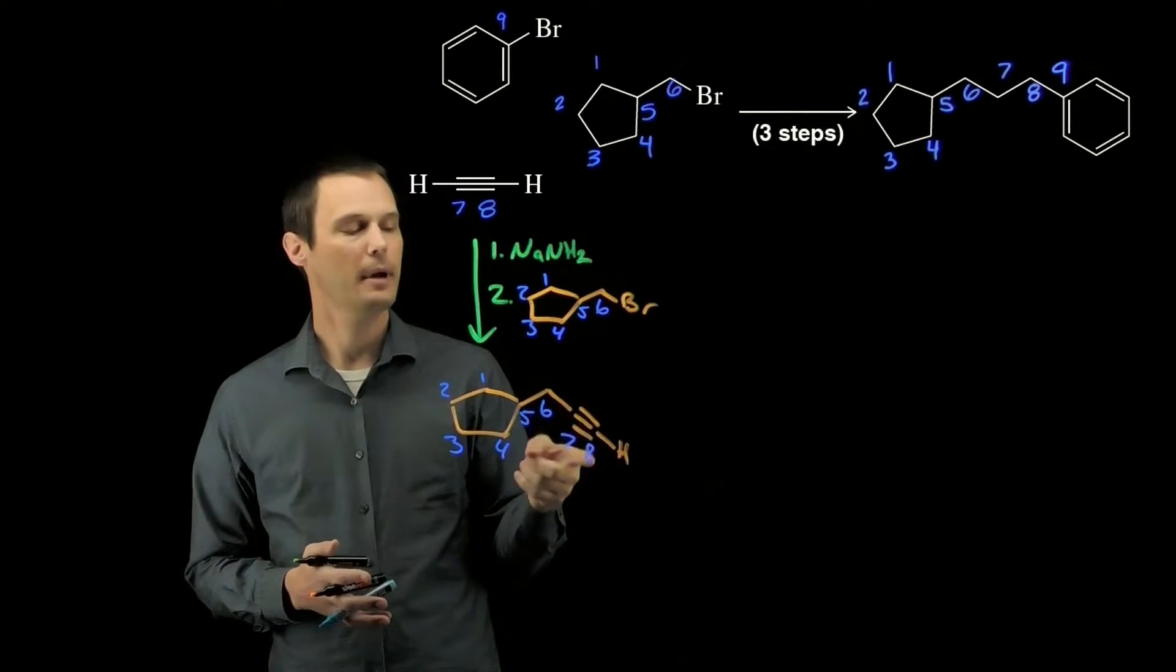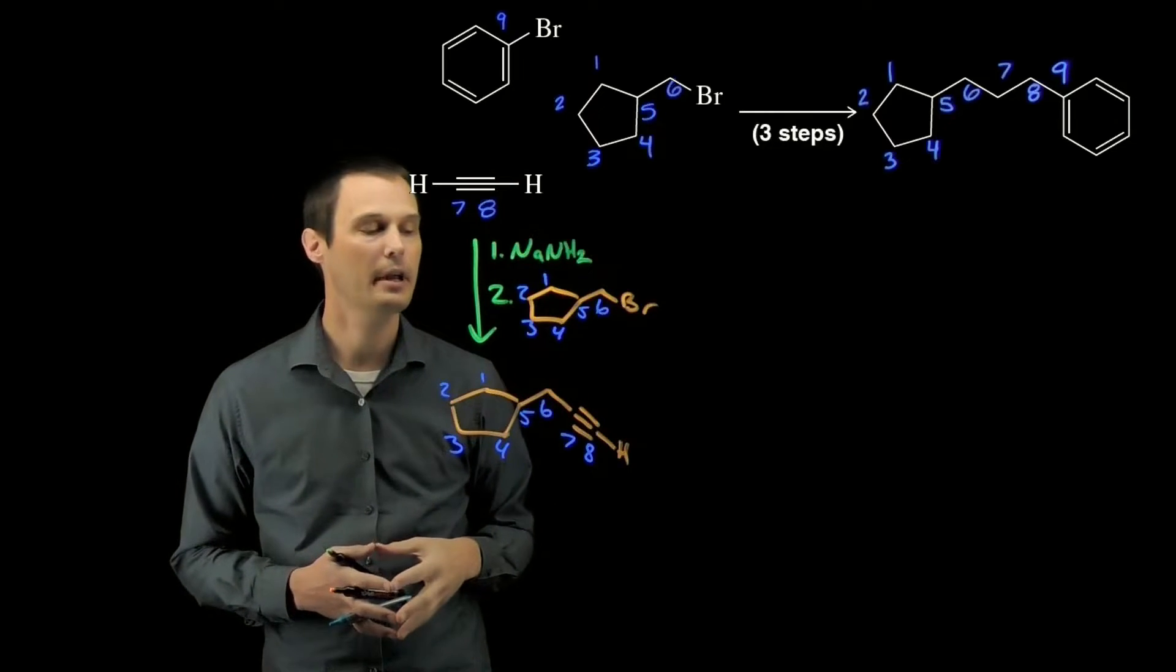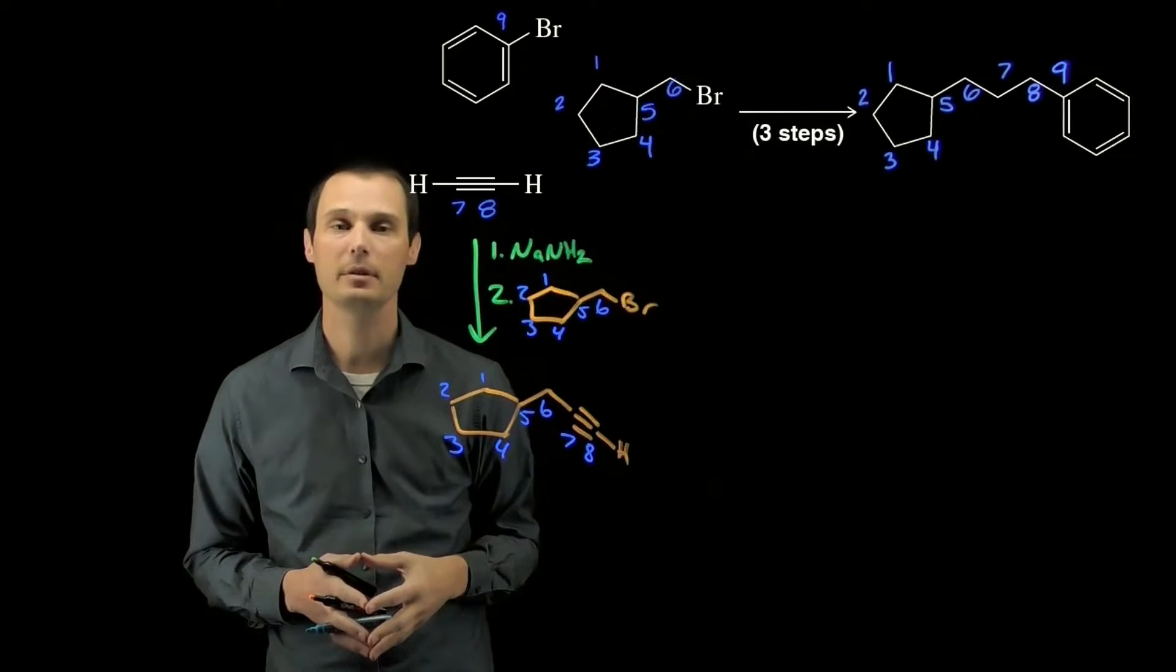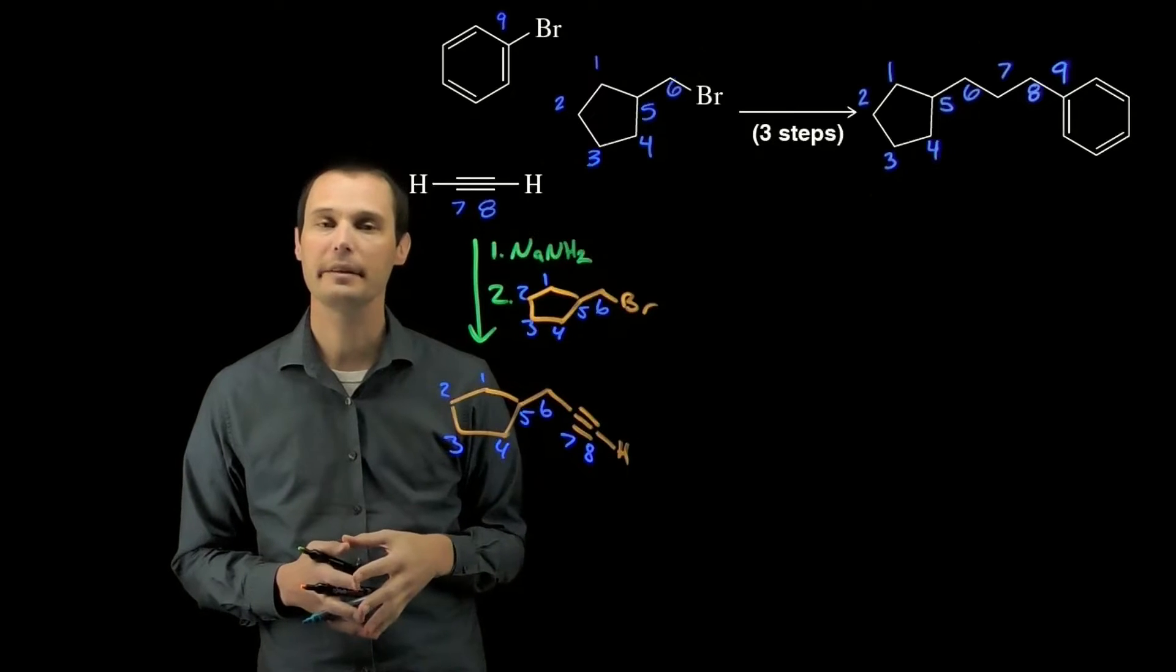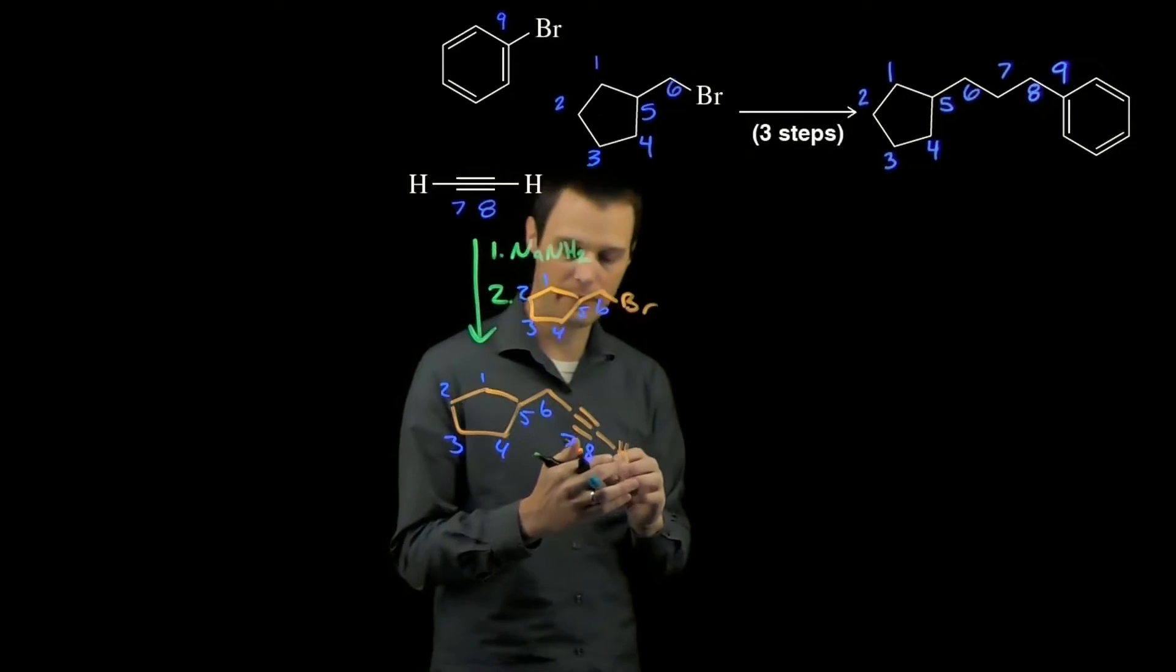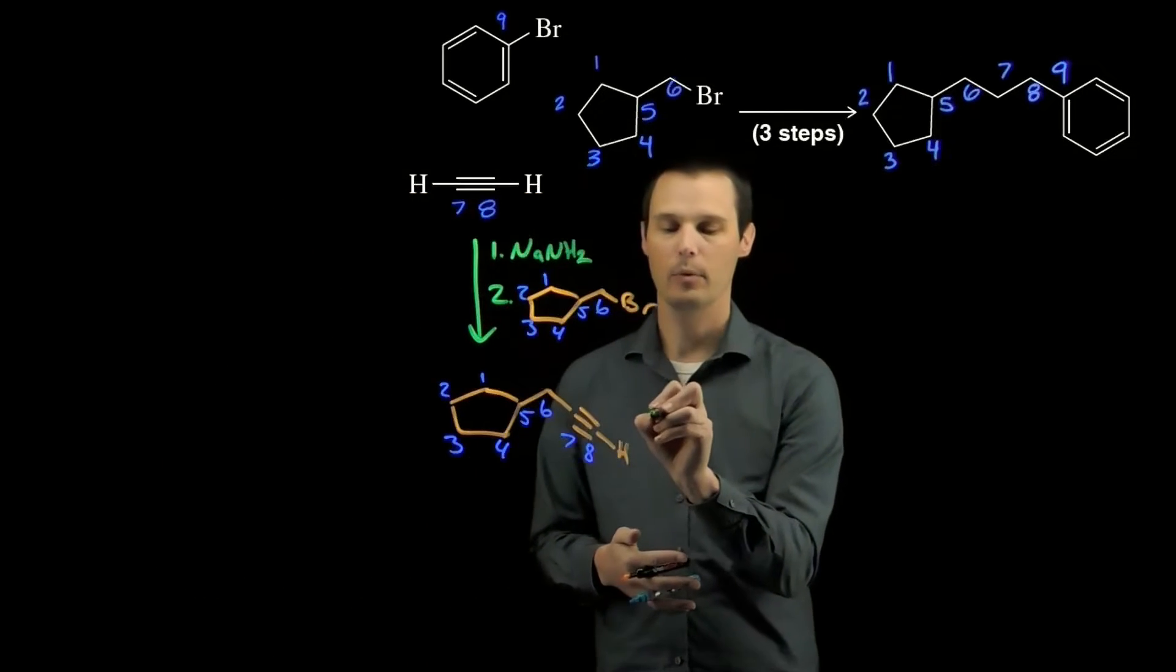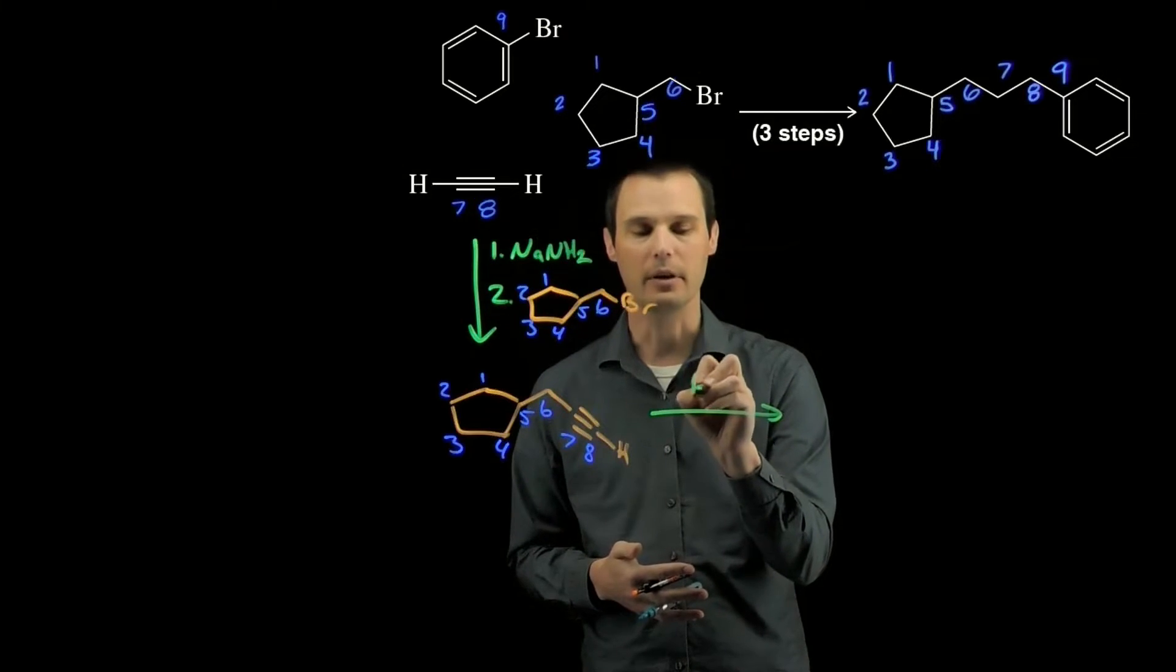We want to form a carbon-carbon bond between carbon eight and carbon nine. That means we need carbon eight to be some kind of organometallic reagent. We can't do that directly from the alkyne, but we can do that from an alkene.